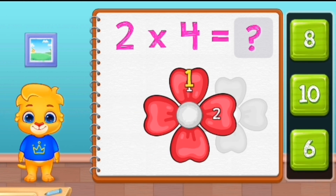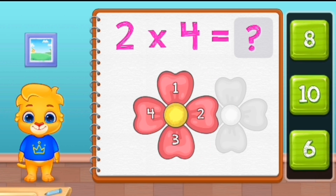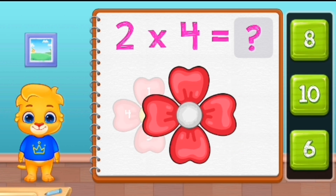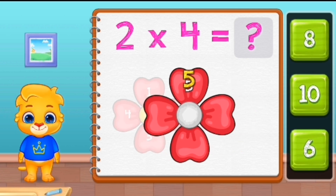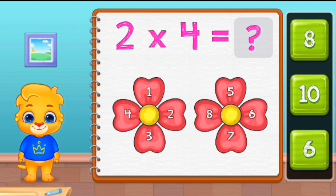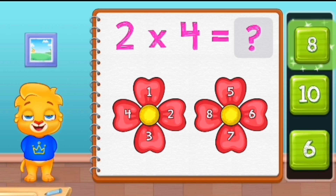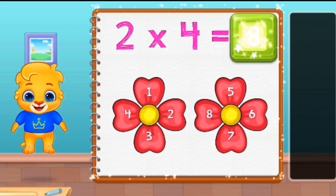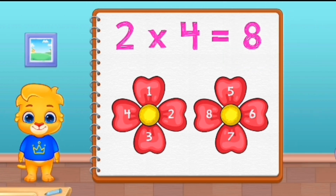One, two, three, four. Five, six, seven, eight. Eight. Two times four equals eight.